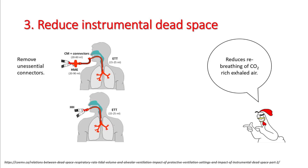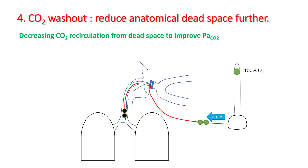You can also reduce instrumental dead space while on the ventilator. Connectors in the circuit can take up 80 to 150 cc's, increasing your dead space — this is called instrumental dead space. If you remove them, you are going to reduce recirculation of carbon dioxide and improve CO2. For a detailed understanding of how much this helps, see my lecture on how anatomical dead space causes hypercapnia.